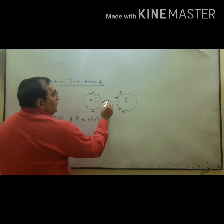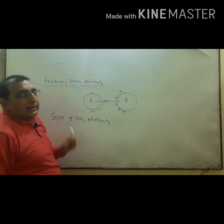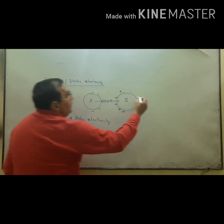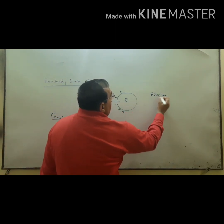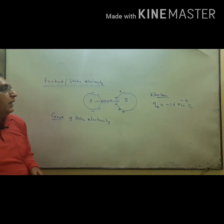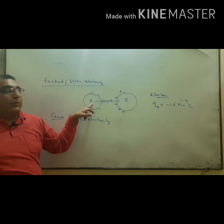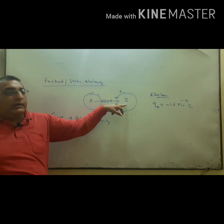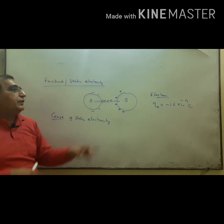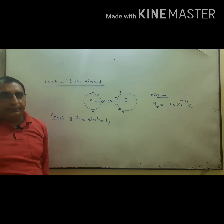Suppose B has electrons loosely bound and A has electrons tightly bound. Then transfer of electrons will take place from B to A. The charge on an electron is −1.6 × 10⁻¹⁹ coulomb. Where electrons go, that body becomes negatively charged; where electrons leave, that body becomes positively charged.